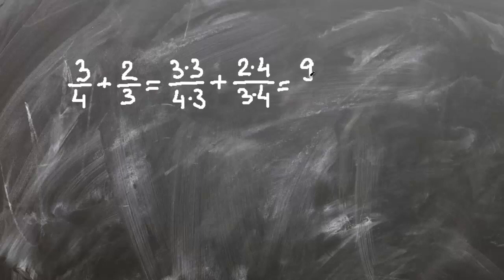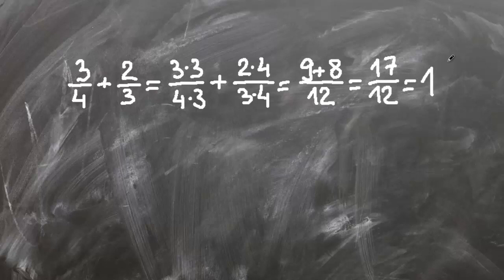Now this equals to nine plus eight over twelve which is seventeen over twelve. We can write this as one and five over twelve.